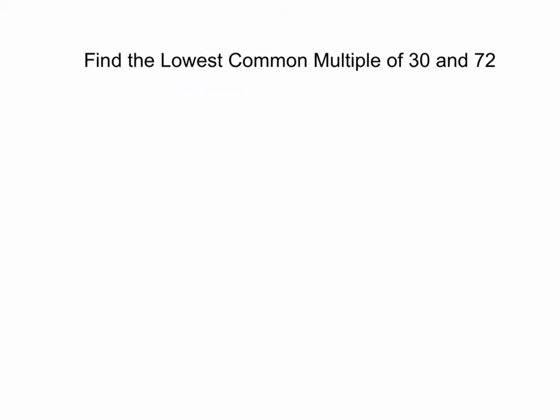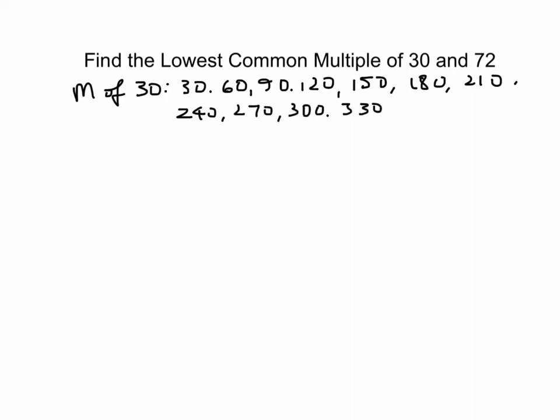So here's a standard approach for finding the lowest common multiple. What you have to find is multiples of 30. So that means you start with 30 and you keep going up by 30s each time. So 30, 60, 90, 120, 150, 180, 210, 240, 270, 300, 330, 360, etc.